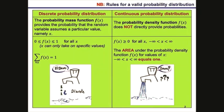If we look at continuous probability distributions, the probability density function f of x does not directly provide any probabilities. However, f of x is a positive function for all x, and those x values can take any possible value between negative infinity and positive infinity. In the case of continuous probability distributions, the area under the probability density function f(x) for all values of x equals 1.